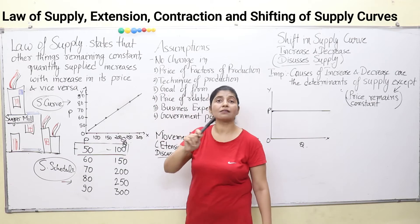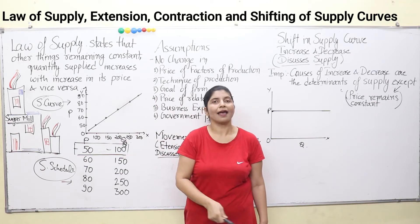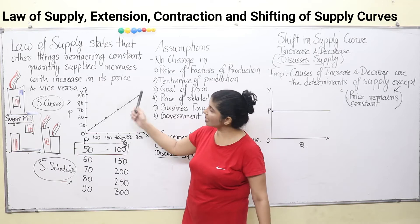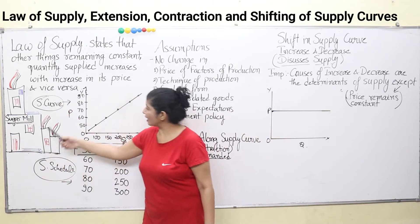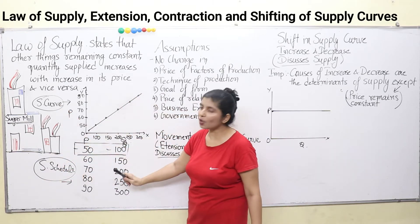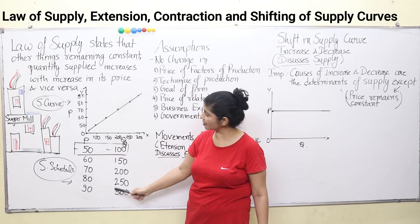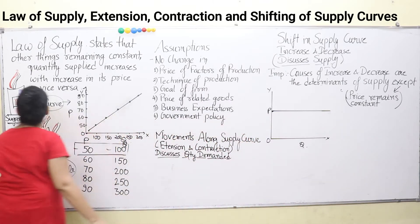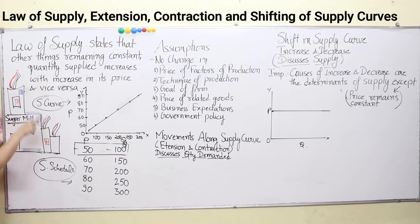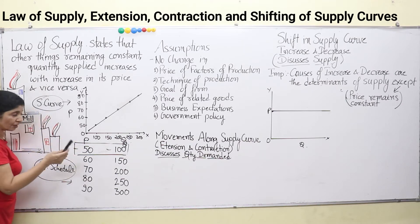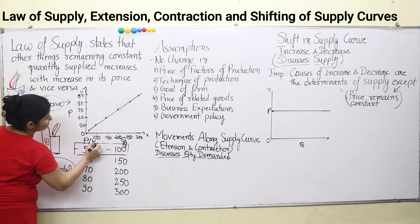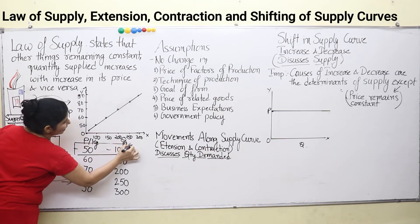So higher price means higher supply and lower price means lower supply. We can see here: this is a firm and this is a schedule of quantity supplied at different prices, and this is the curve. Let's discuss them. This is the sugar mill, and these are the prices of sugar at different quantities — price per kg — and this is quantity in kg.